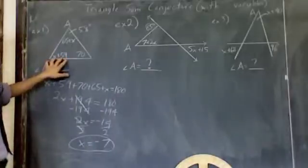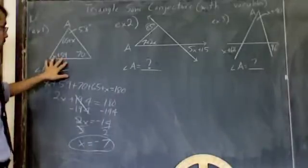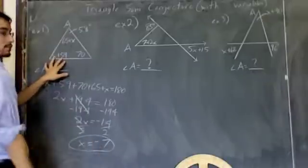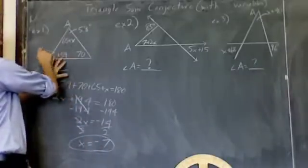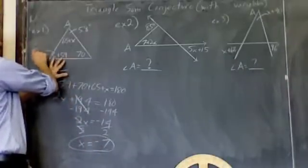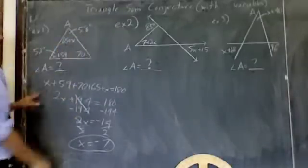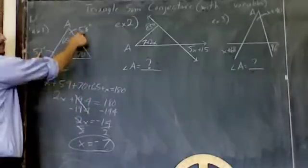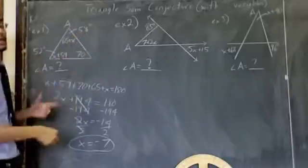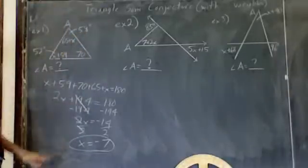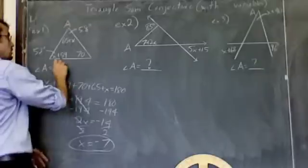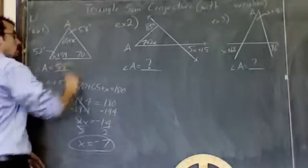I should plug it in here as well, just to be sure I'm doing it right. Instead of x plus 59, now it's negative 7 plus 59, which is 52. Just to be sure I did this right, I want to make sure these three angles add up to 180. 52 and 58 is 110, 110 plus 70 is 180. This problem is totally done right. A is 58 degrees.